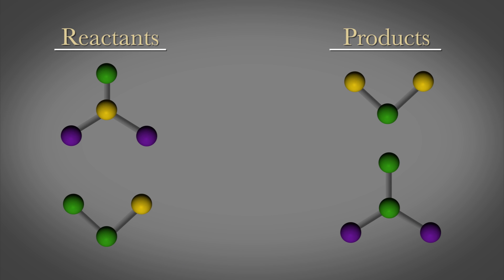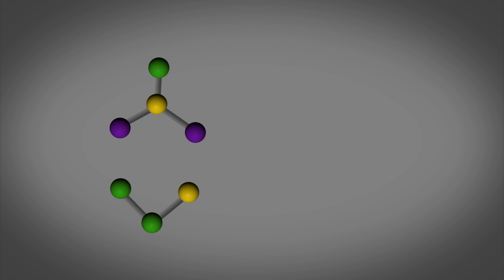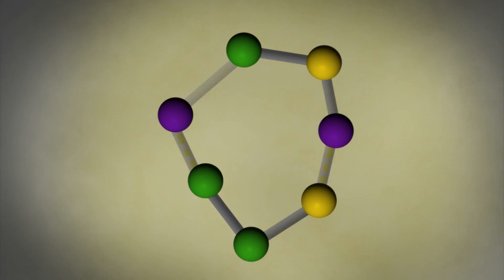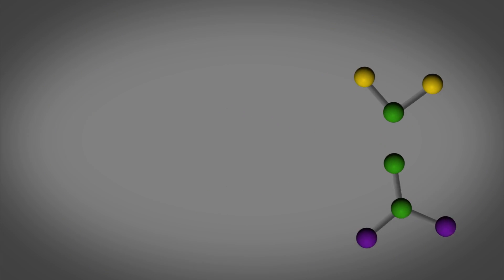We often write down reactions, reactants go to products, but we don't think about the steps that occur in between to facilitate that actual transition. What are the bonds that break and which bonds break first? How do the new bonds form? How do the chemical species come together to actually facilitate that reaction?